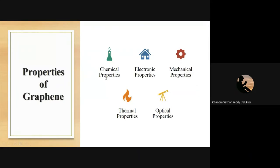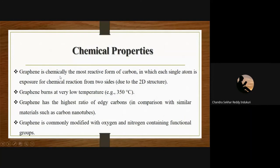Graphene exhibits wide variety of useful properties across different fields. In chemical properties: graphene is the most reactive form of carbon, with each single atom exposed for chemical reaction from both sides of the two-dimensional material. Graphene burns at a very low temperature of 350°C. It has the highest ratio of edge carbons in comparison with similar materials such as carbon nanotubes. Graphene is commonly modified with oxygen and nitrogen-containing functional groups.